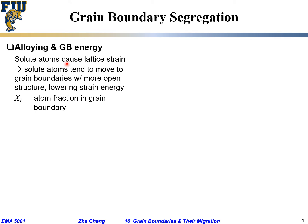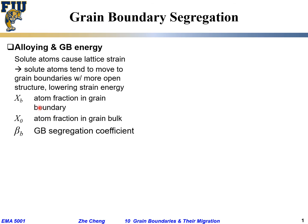Let's define a few parameters. x_b is the atom fraction in the grain boundary; x_0 is the atom fraction for the solute atom within the bulk, within the grain. x_b is in the grain boundary. Then if we define a parameter called beta_b — the grain boundary segregation coefficient — which is essentially the ratio of x_b over x_0. That measures how much segregation, how great the tendency for the impurity atom to go from the grain to the grain boundary, from the densely packed grain to the more open grain boundary.